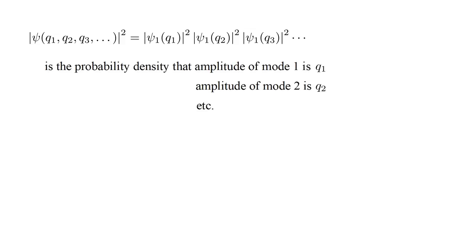This gives us the probability density that the amplitude of mode one is q1, the amplitude of mode two is q2, et cetera.